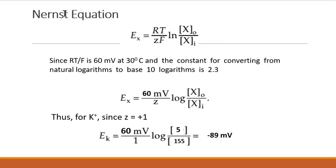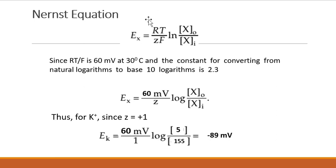This is explained by the Nernst equation. The Nernst equation gives the equilibrium potential of ion X as: E = (RT / ZF) × ln([X]outside / [X]inside), where R is gas constant, T is temperature, Z is valency, and F is Faraday's constant. Assuming standard values for RT/F, the equation simplifies to: E = (60 / Z) × log([X]outside / [X]inside).